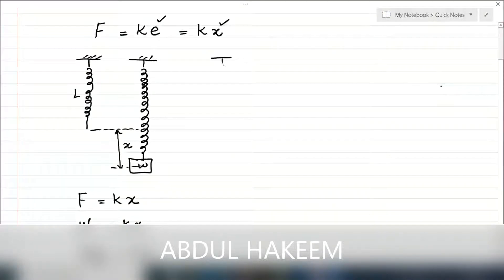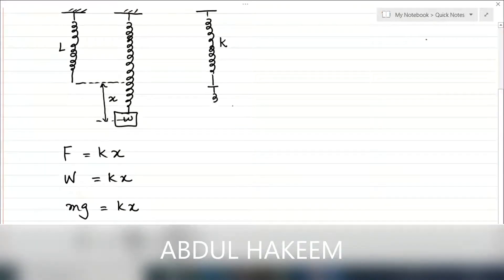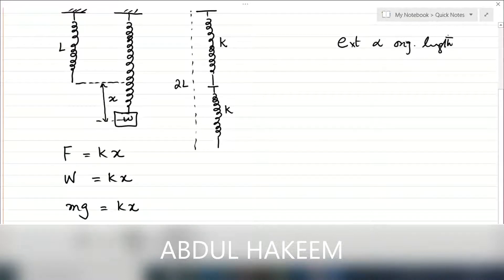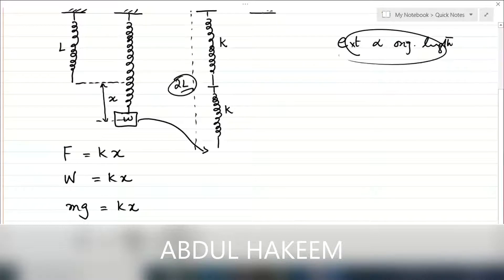Now, two identical springs are attached one after the other — this is called a series combination. The total length from top to bottom becomes 2L. Since extension is directly proportional to original length, when this load is hung, the extension will be double due to the double length.